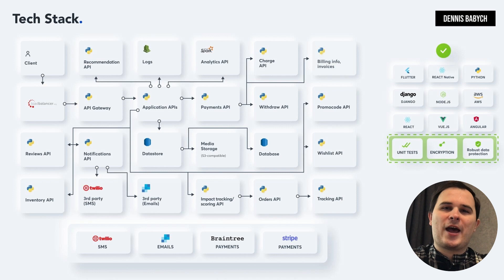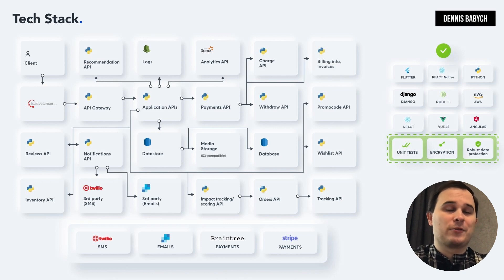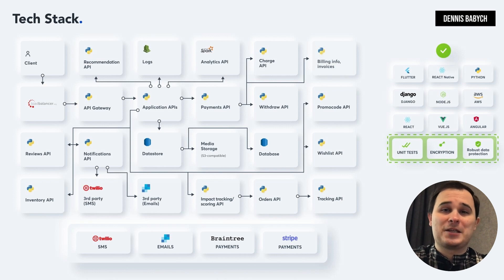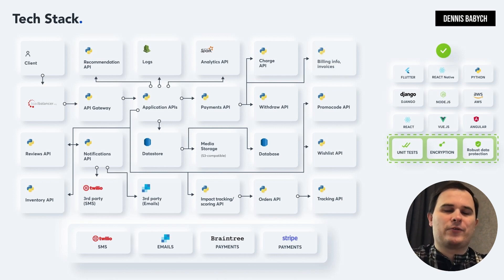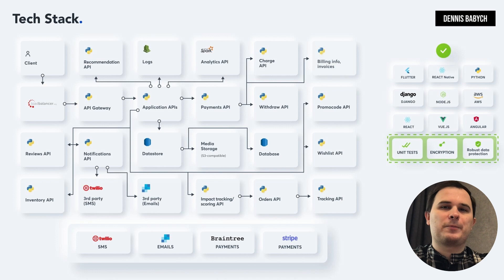Moreover, due to healthcare app development compliance and different regulations, it's important to incorporate unique tests in your code, encryption, and robust data protection for your users. Additionally, leveraging third-party services like Stripe and Braintree for payment processing, Tula for SMS, and SendGrid for emails can expedite your development timeline. Remember, it's crucial to choose the appropriate tech stack for each stage of your software development journey — this starts with a minimum viable product, but also involves planning your future feature set when designing your app architecture. The right tech stack is like receiving a correct diagnosis after a blood test.